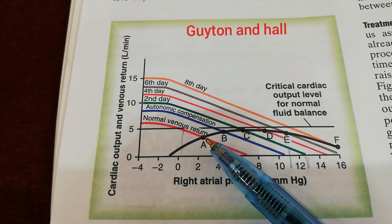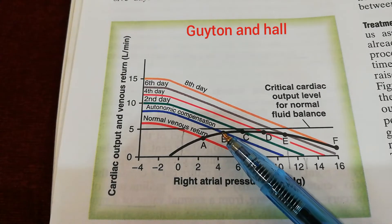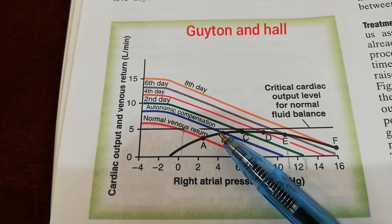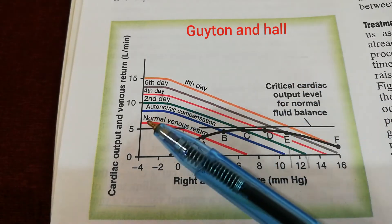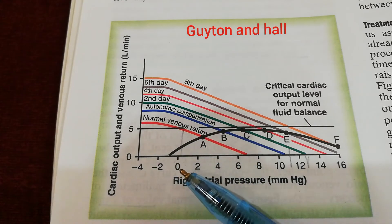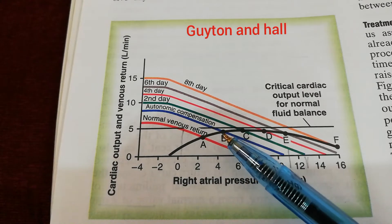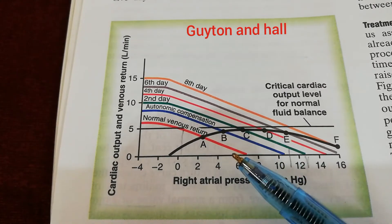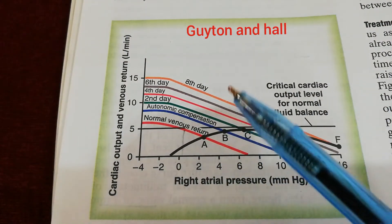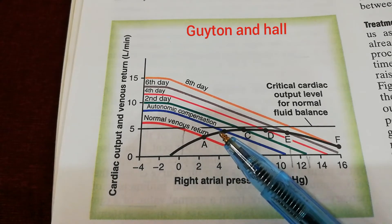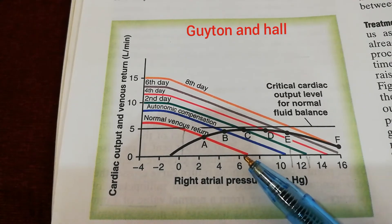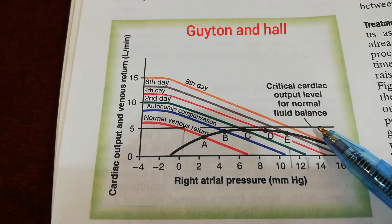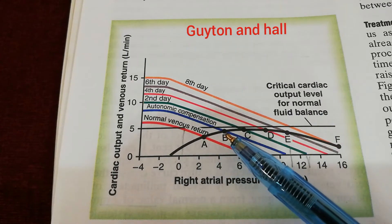With autonomic compensatory processes, cardiac output has increased from point A to point B, which is around 4 liters per minute — up from 3 liters. However, the right atrial pressure has increased from zero to around 5 millimeters of mercury at point B, between 4 and 6. So the increase from point A to point B comes at the cost of increased right atrial pressure and increased mean systemic filling pressure from 7 to around 10.5. The cardiac output is still below the critical level of five liters per minute, so more fluid retention will occur.